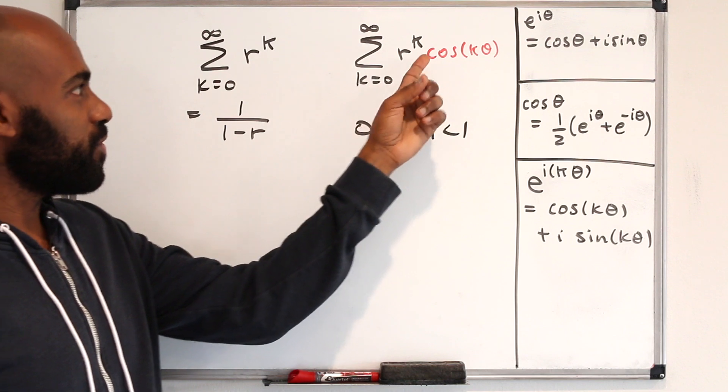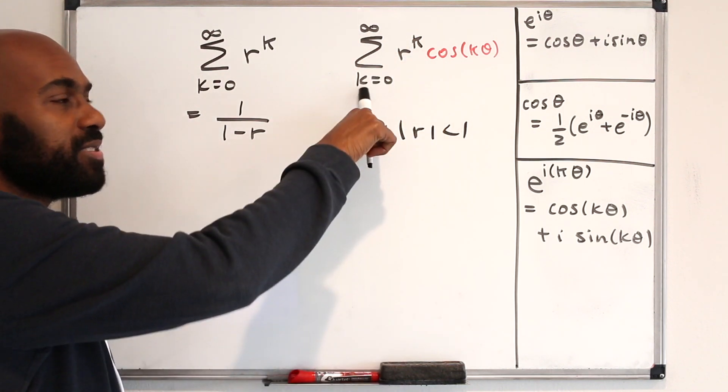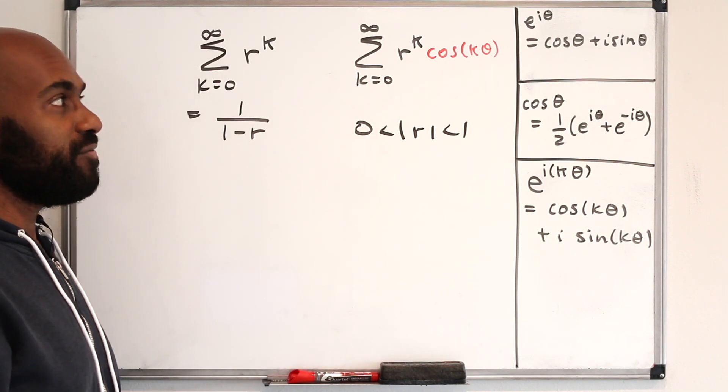What if we pad this with a cosine of k times an angle beside the r to the k? What happens to this sum? That's the question we're going to investigate today.